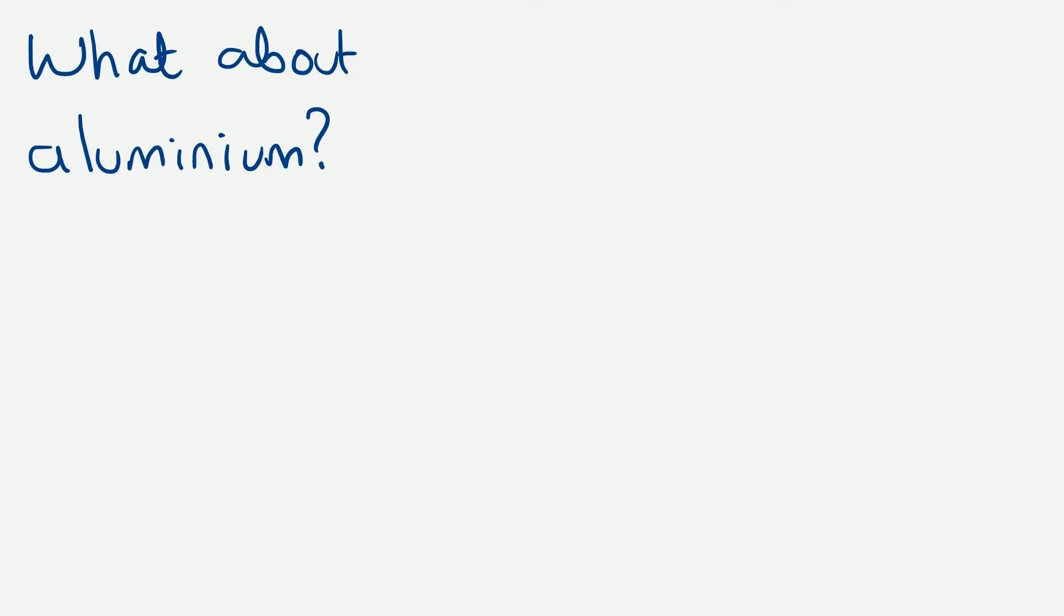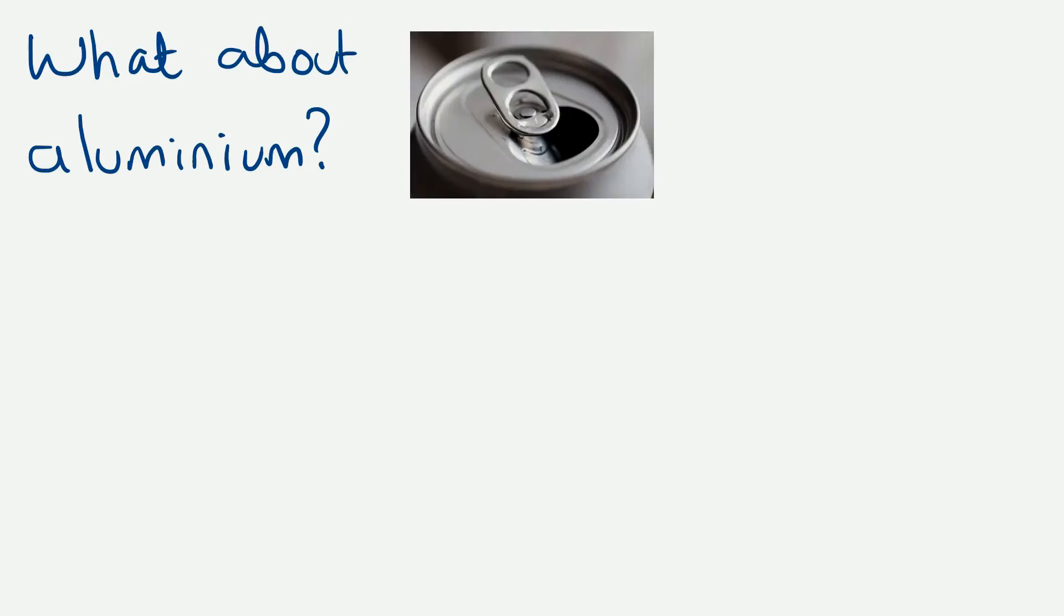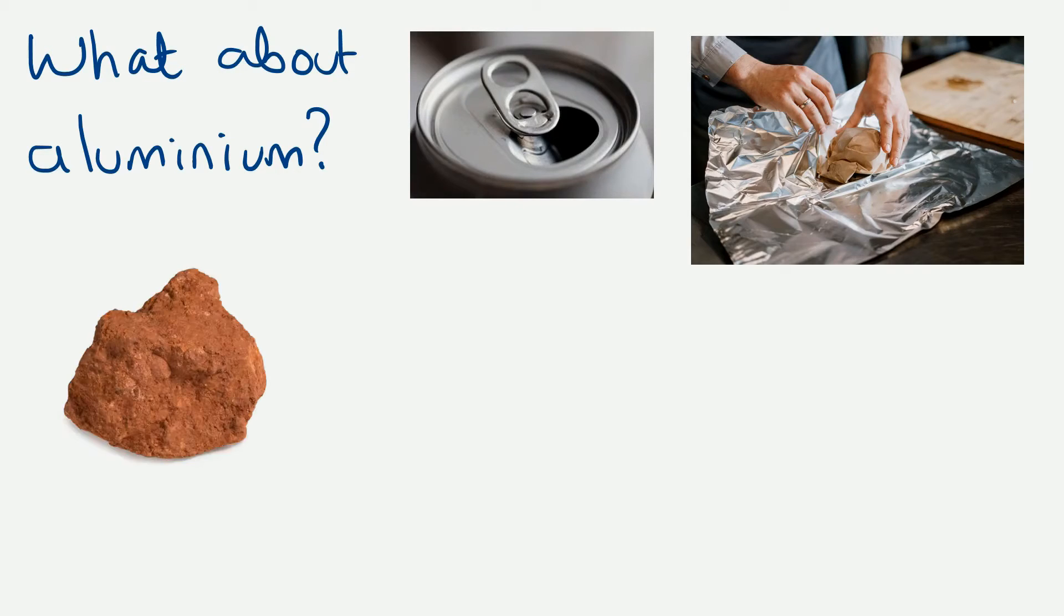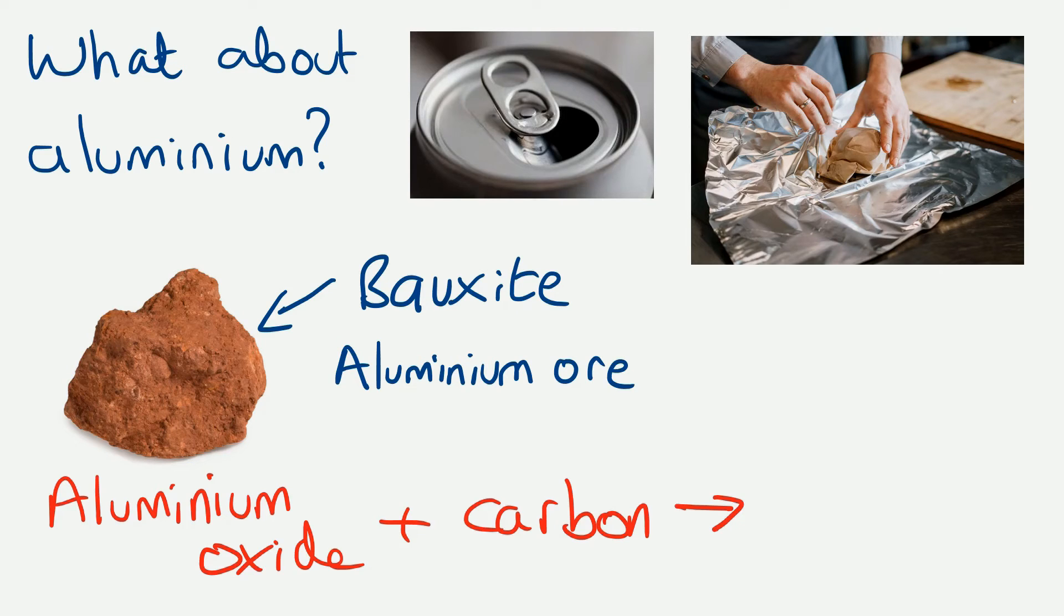So what about aluminium? Aluminium is a useful metal we use it in drinks cans and we also use it in kitchen foil and just like copper it comes from a rock and this rock is called bauxite or we could call it aluminium ore because it contains enough of the metal to make it worth extracting. And in the aluminium ore the aluminium is in the form of aluminium oxide.